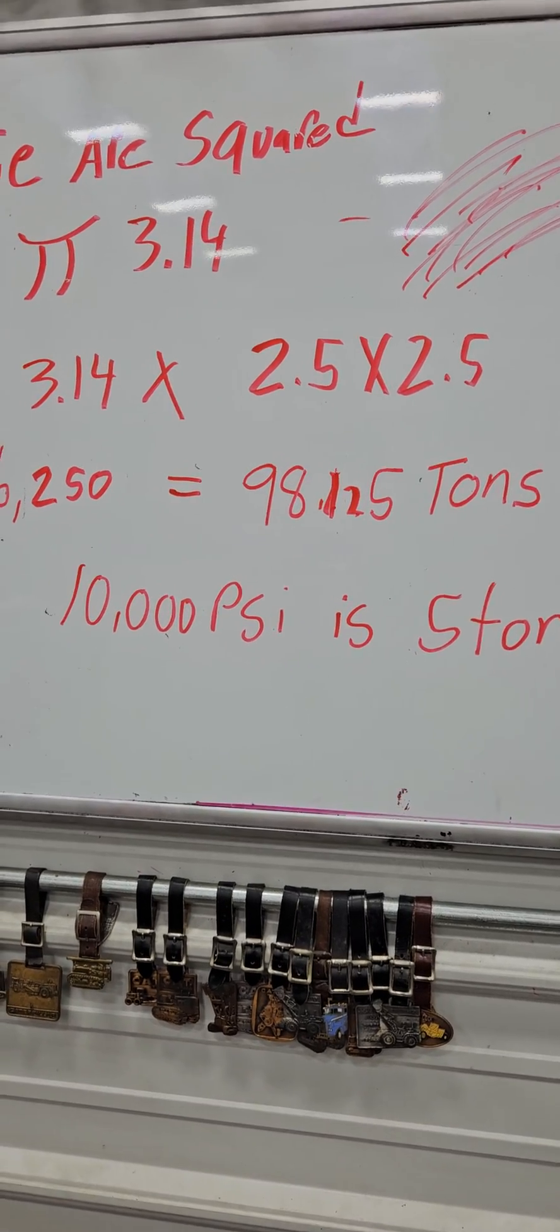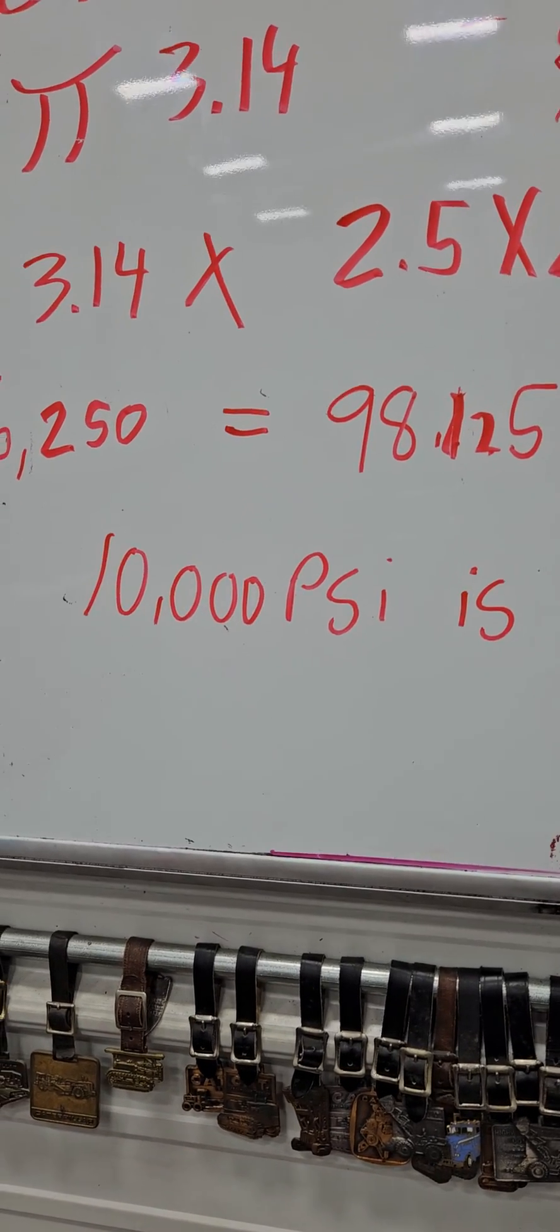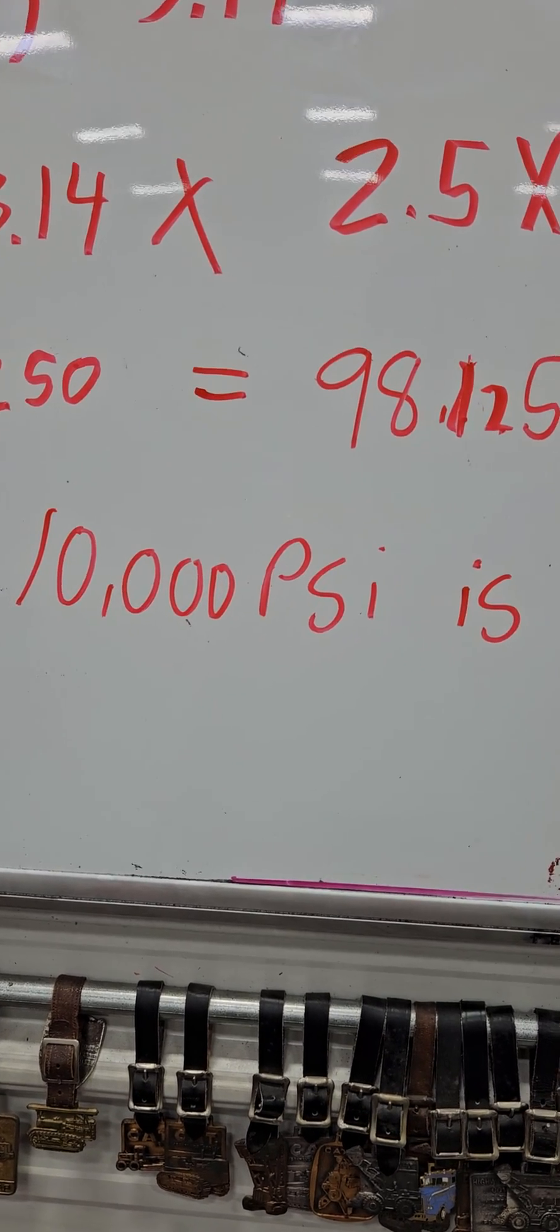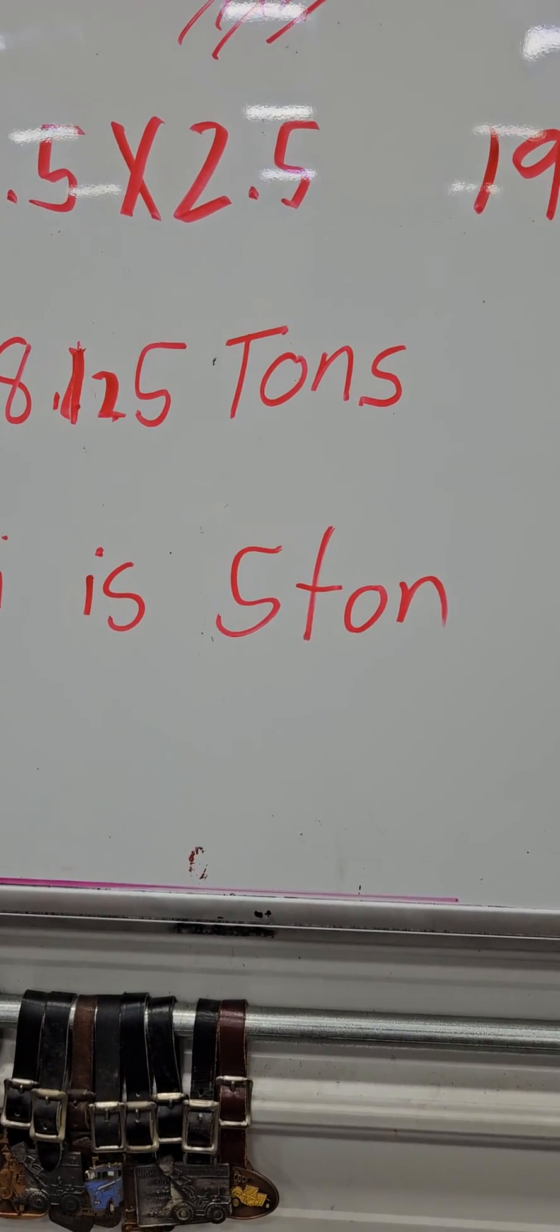So let's do a little whiteboard today. Got a lot of comments on my video pulling the sprocket on the D9. They said 10,000 psi is only 5 ton.